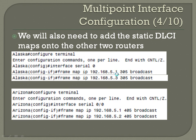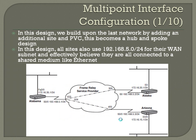And the same thing on Arizona — frame-relay map IP 192.168.5.1, 405, broadcast. Frame-relay map IP 192.168.5.2, 405, broadcast. Going back to the original network design, for Alaska it needs a mapped DLCI for each of those IPs, but they're both going to use that same 305 DLCI number because that's the only option it has. Same thing for Arizona — both IPs map to DLCI 405, but you still need a static mapping for each of those individual IPs.